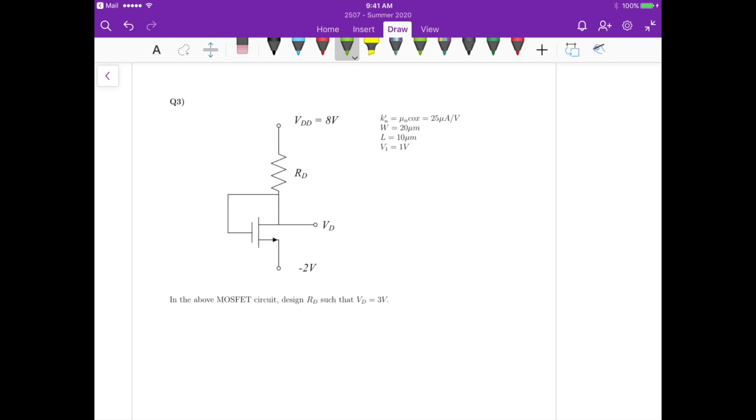Okay, for question three we have this MOSFET circuit. So if we look at the circuit we have this source here connected at minus two volts, we have the drain and the gate connected at the same potential here VD.